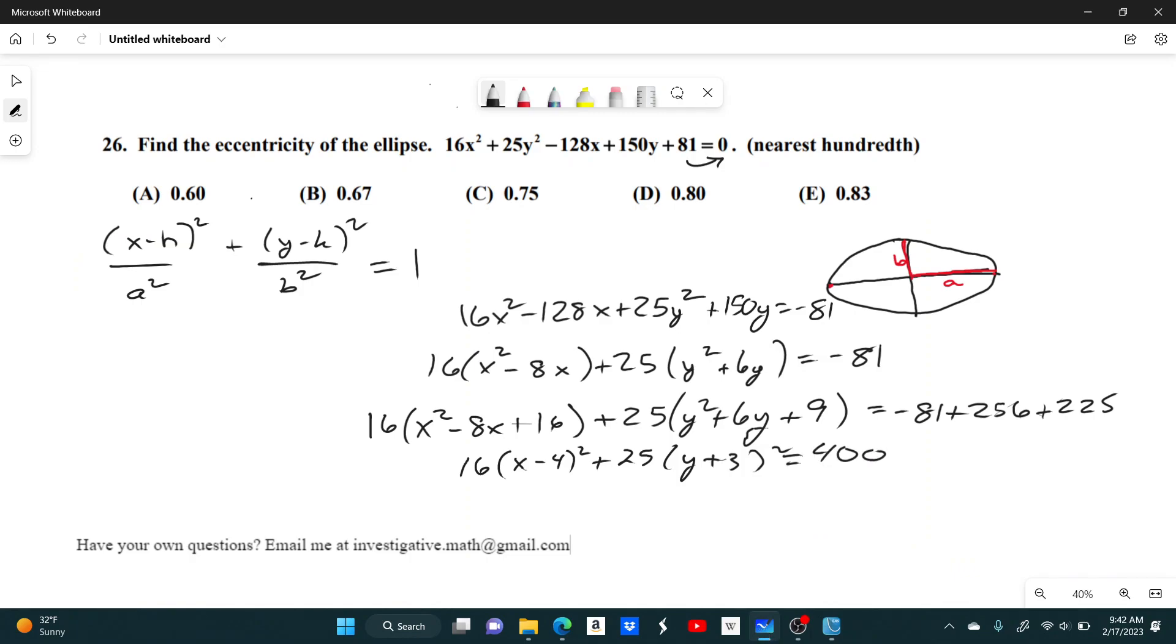So you might notice that the big difference between this and our standard form now, we have our x minus h squared, we got the x minus 4 squared, and the y plus 3 squared. The big difference now is that we need to have this all equal to 1. Well, that's a pretty easy fix. We can just divide both the left and right by 400. So if we do that, 400 divided by 400, obviously, is going to give you 1.